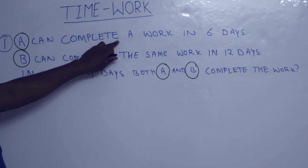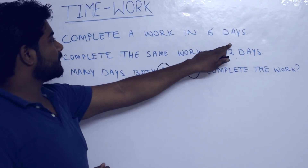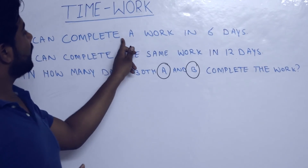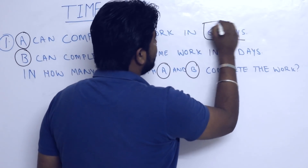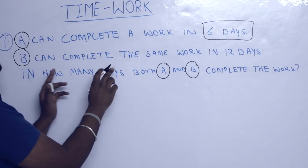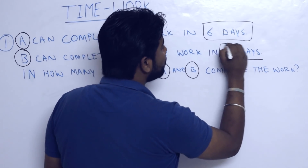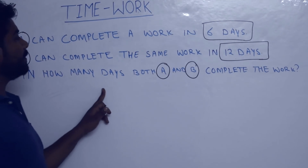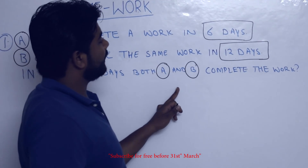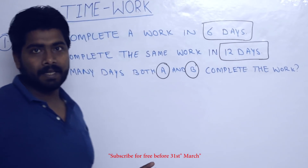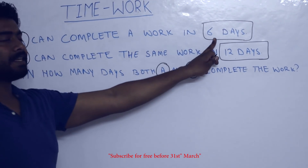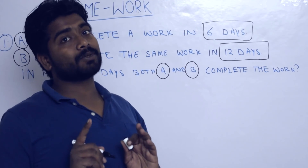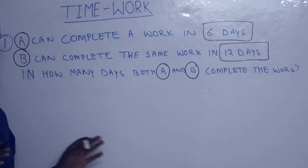A can complete a work in 6 days. B can complete the same work in 12 days. The question says: in how many days will both A and B complete the work if they work together?